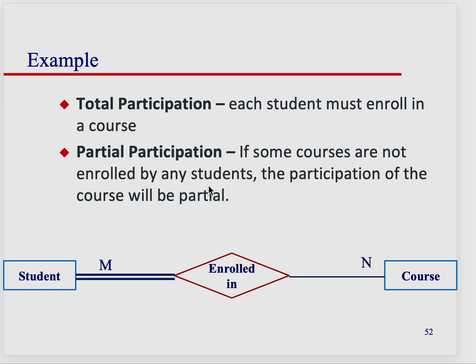Another example. Because I have the total, the double line here, the total participation by student, it reads every student. So when you say each student enrolls in many courses, it means literally each student. A student must be enrolled in a course. That's how you would read it.